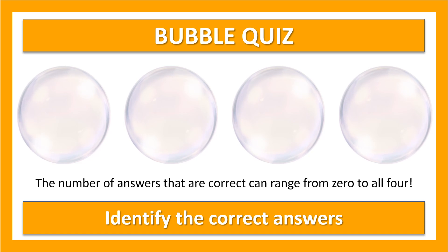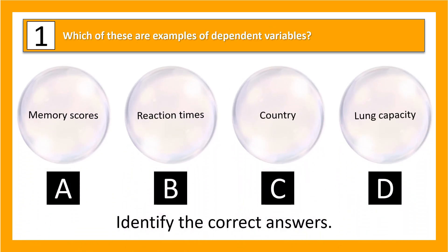Let's take a look at what you've learned so far. We'll do this on screen, so just hold the answers in your head. There could be no correct answers, or there might be one, two, three, or four. First question: which of these could be examples of dependent variables? We've got memory scores, reaction times, country, and lung capacity. Take a moment to think about it.